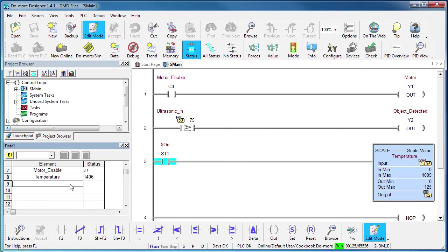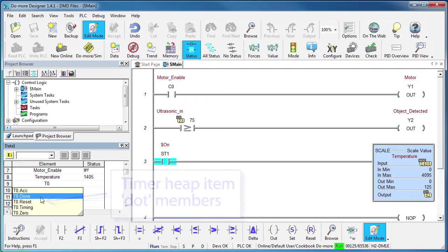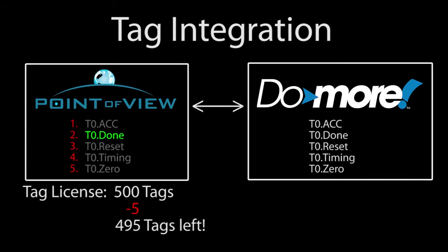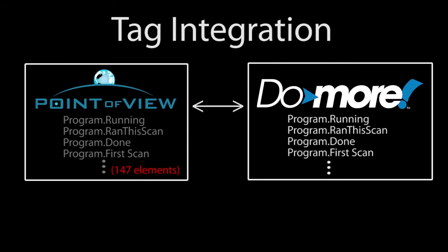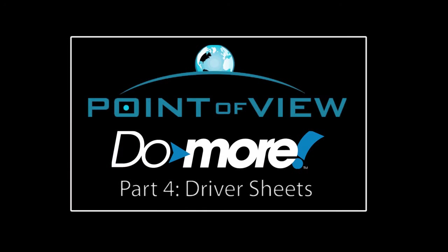The second Do More specific caveat is if you use any member of a Do More structured heap item in Point of View – like this timer done bit – then Point of View will deduct the total member element count from your tag license. In this timer example, if we use this one timer done element in Point of View, it will reduce the tag license count by 5 because there are 5 elements total in this heap item. If you use a single PID element like the set point, Point of View will deduct 19 tags from your license, and if you use a program element like this program done bit, you'll lose something like 147 tags off your license because that's how many member elements there are in that structure. If that's a problem for your project, take a look at the next video on the main driver's sheet, which gives you a way to use one element at a time without the entire structure element count going against your tag license.